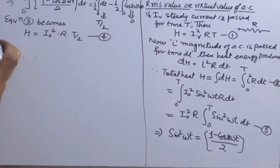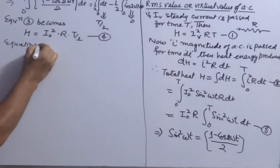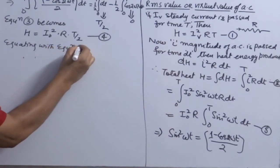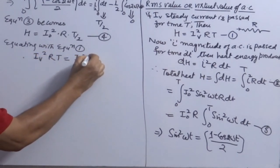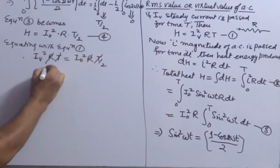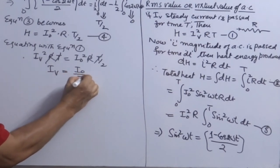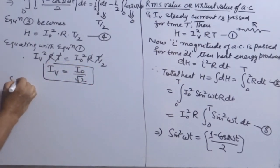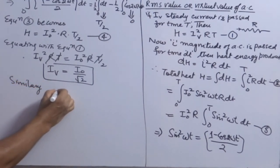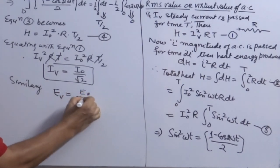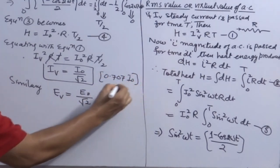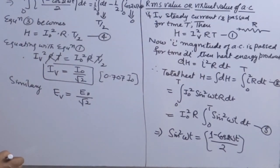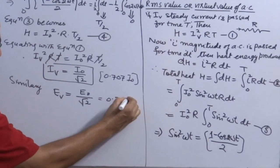Equating with equation for DC heat: Iv²RT = I₀²RT/2. T and R cancel on both sides, giving Iv = I₀/√2. Similarly, the virtual value of EMF is Ev = E₀/√2. So this value is 0.707 I₀, and the virtual EMF is also 0.707 E₀.